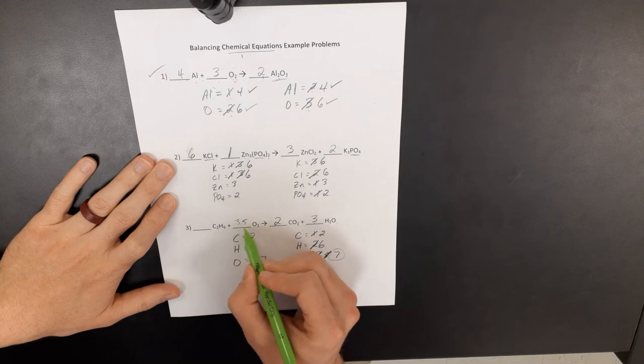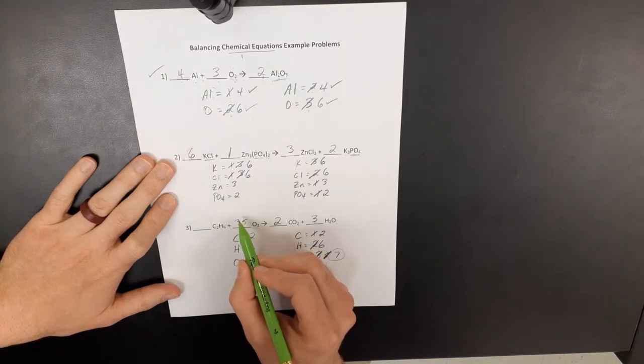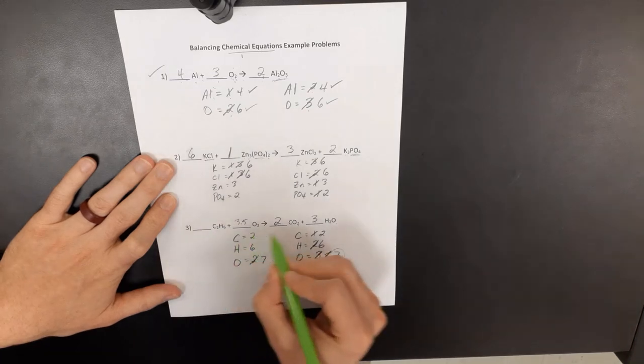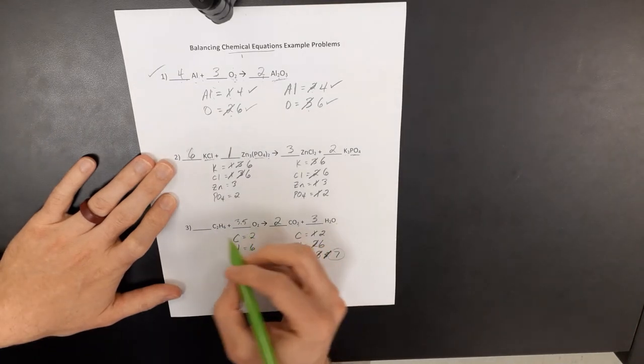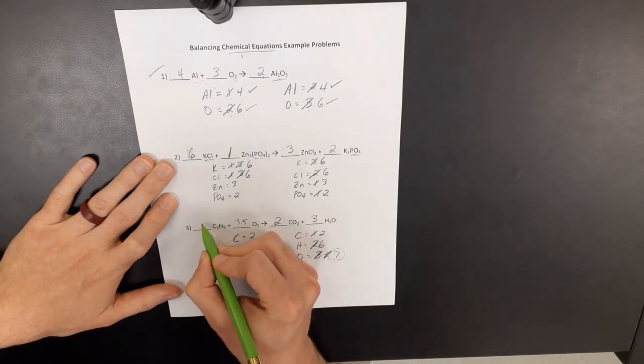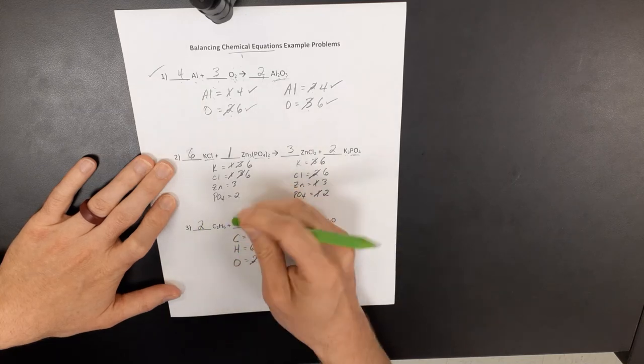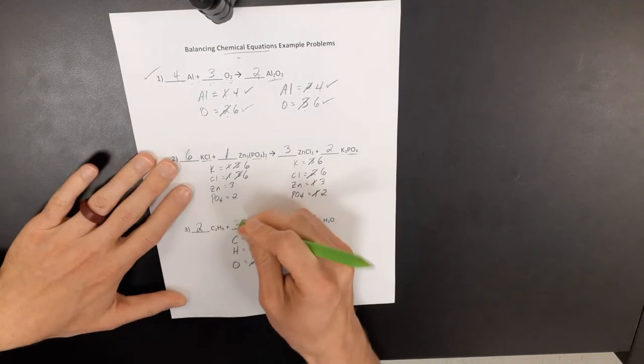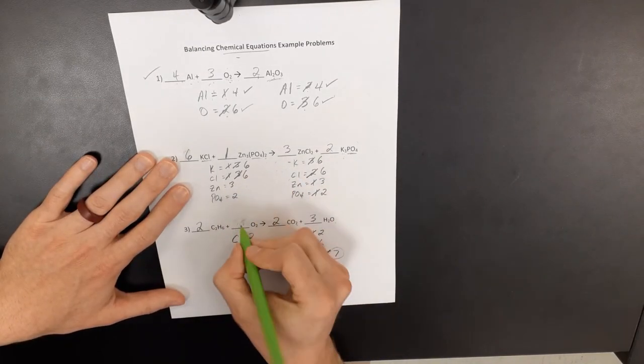But what I need to do is think of as, okay, how would I get rid of 3.5? I don't round it up to four or anything. I want to think of is I need to come in here to multiply everything by two. So this is a one. I'm going to multiply it by two. This 3.5 times two becomes seven.